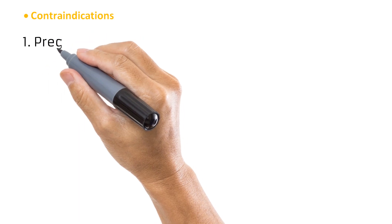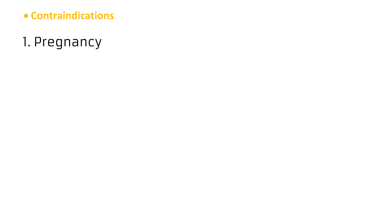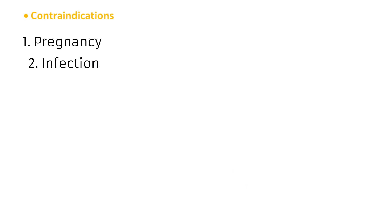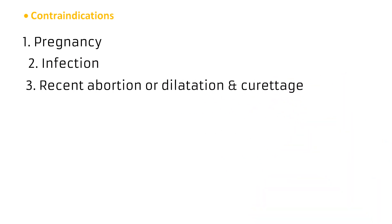When do you not perform a hysterosalpingography? First is pregnancy — HSG should never be carried out on a patient who is known or suspected to be pregnant, as the procedure is invasive and will most likely abort any fetus present. It is also contraindicated in patients with urogenital tract infection, as the procedure would spread and worsen the infection. It should also not be performed if the patient has recently had an invasive procedure such as an abortion, dilatation and curettage, or a recent hysterosalpingography, due to risk of venous intravasation of contrast media.